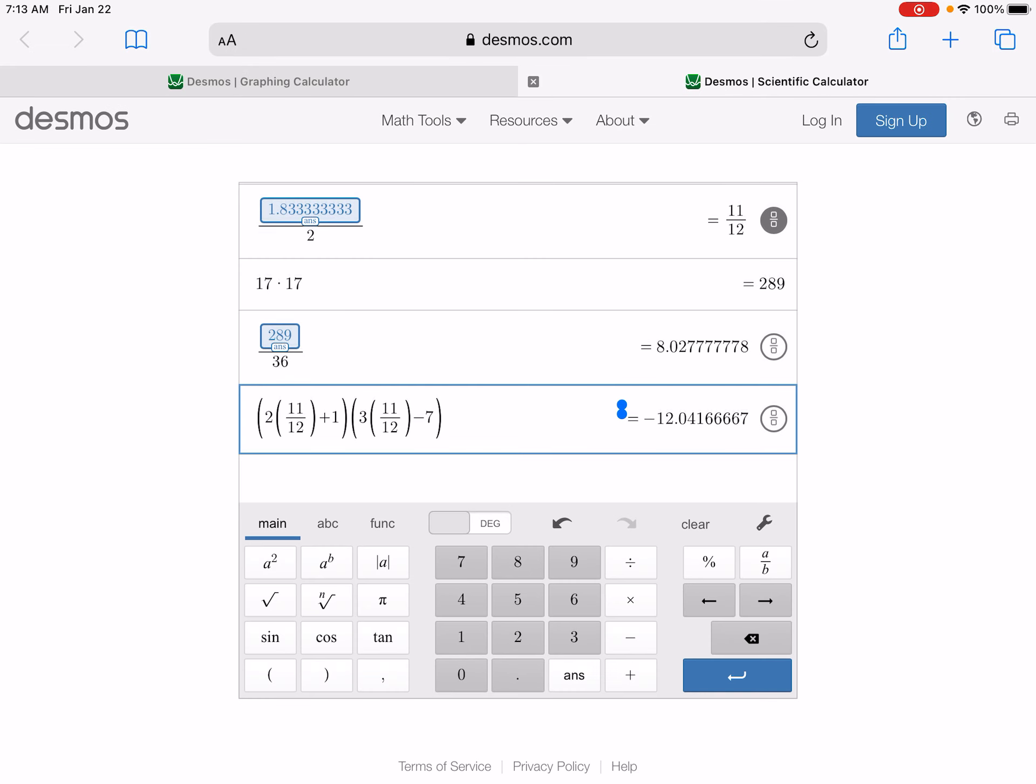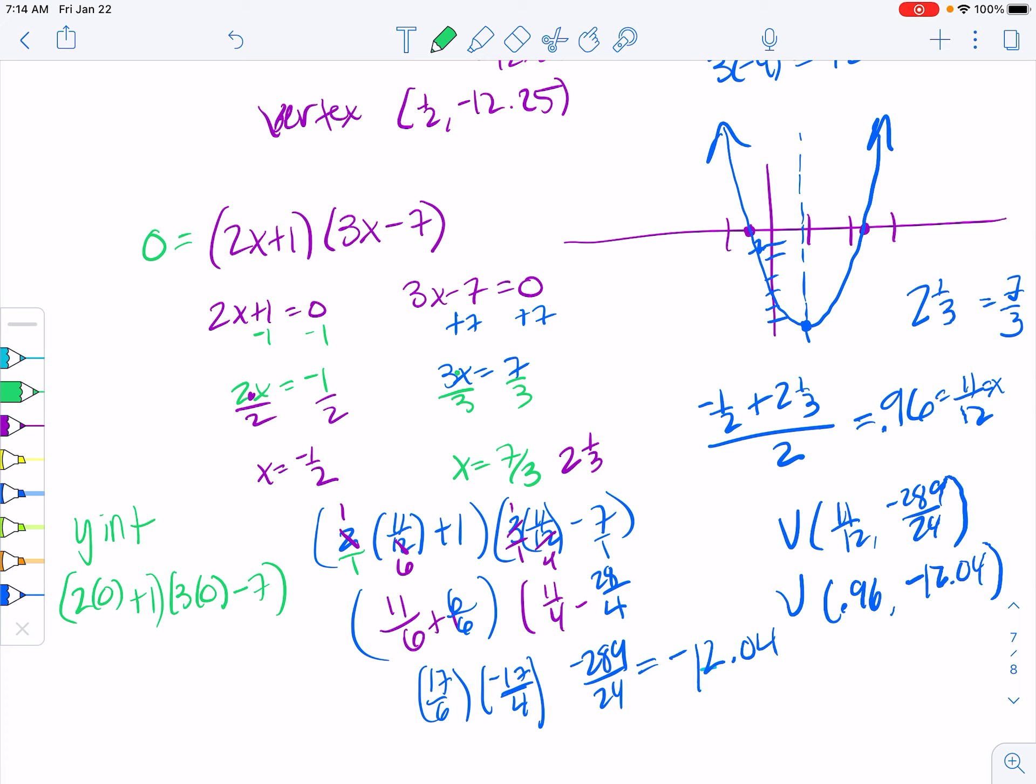We can also still find our y-intercept. If I find our y-intercept, we're going to plug in 0. So 2 times 0 plus 1 times 3 times 0 minus 7. That gives us 0 plus 1, which is 1. 3 times 0 is 0 minus 7, which gives us negative 7. Remember for your y-intercept that your shortcut is that you can just multiply these two things, because these will always go to 0. So I can do 1 times negative 7 is negative 7.